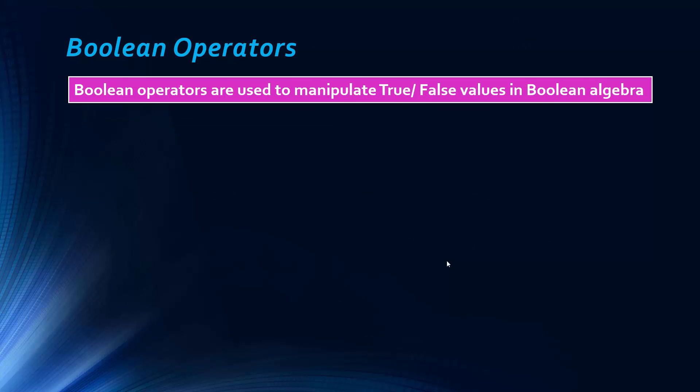Okay, so Boolean operators are used to manipulate true or false values in Boolean algebra. Boolean algebra, don't worry too much about it. It's not really comparable at GCSE. But okay, so you need to know three of these.